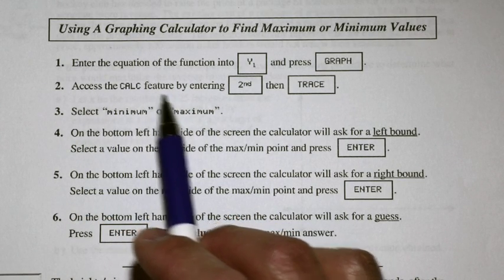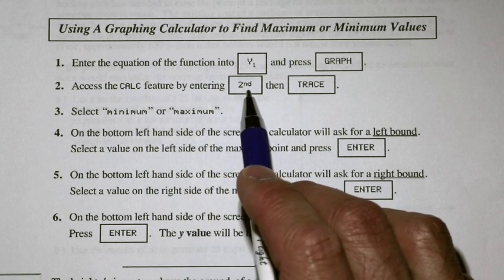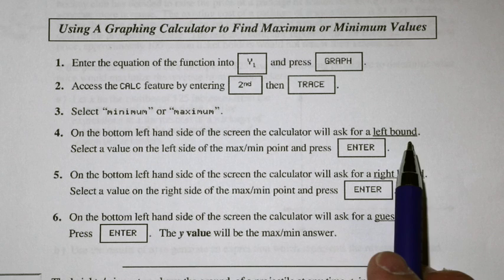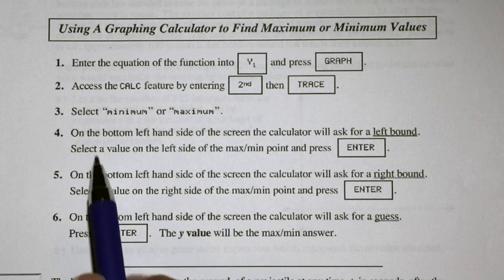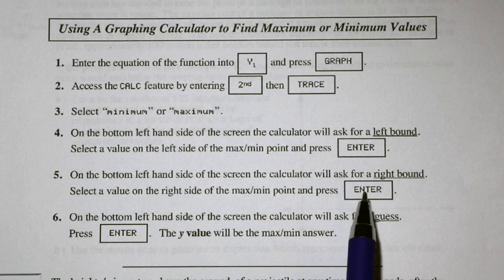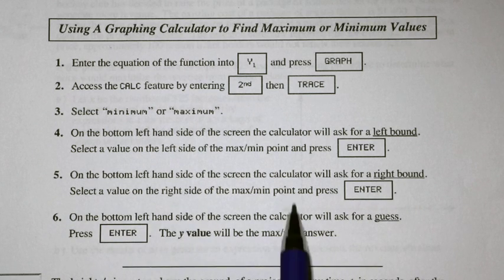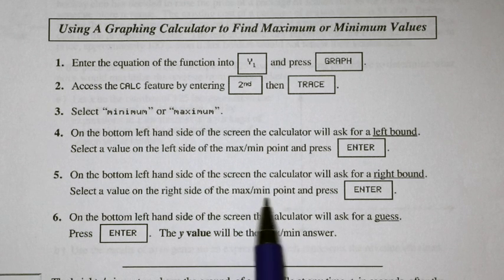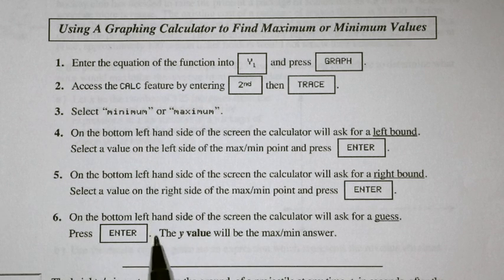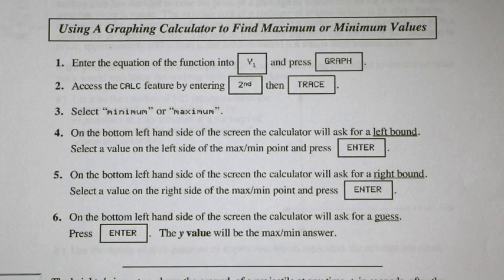Then we're going to find the calculation feature on the calculator by pressing second trace. We'll select minimum or maximum from that menu. On the bottom left of the screen, the calculator will ask for a left boundary — select a value on the left side of the max or min point and press enter. Then it asks for a right boundary; select a value on the right side. Like goal posts so the calculator knows where to look. Press enter, then it says 'guess' — move the cursor close to the max or min and press enter. It'll show you the x and y values as the max or min answer.